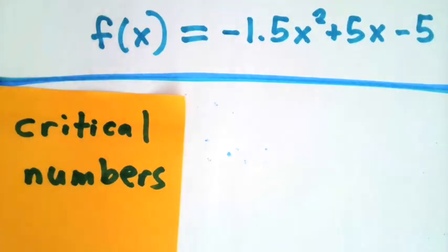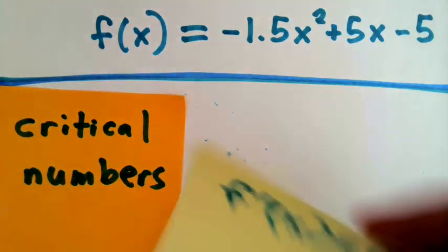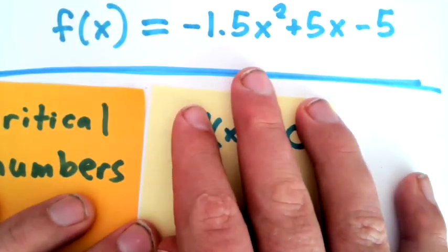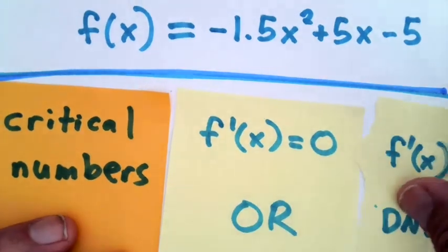Remember, the critical numbers are the places where either f'(x) equals 0 or f'(x) does not exist.